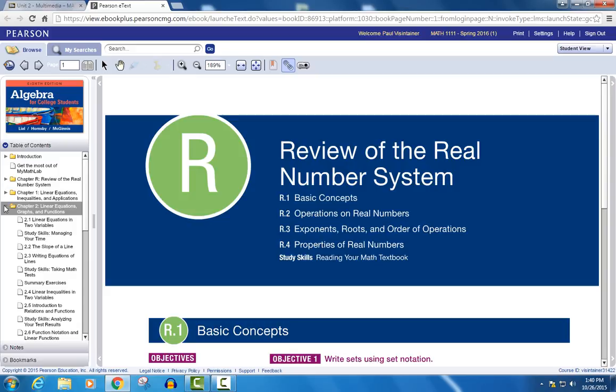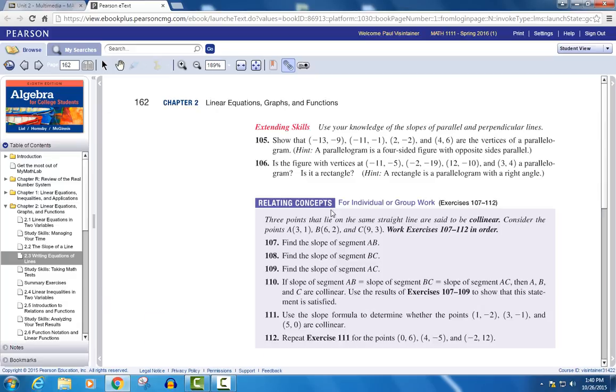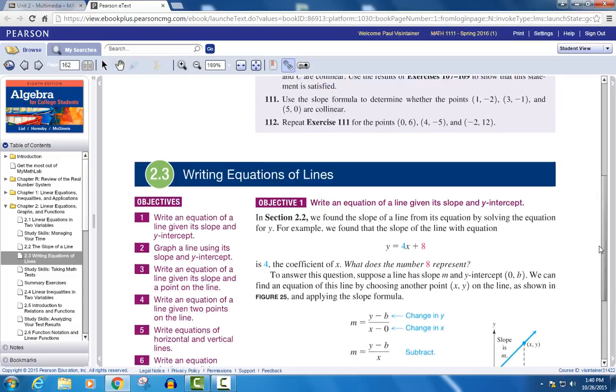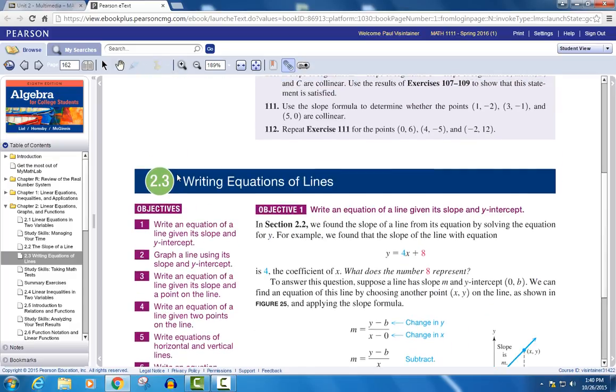It gives you a drop down from Chapter 2, and I can go to, say, 2.3, Writing Equations of Lines, and navigate right to that particular section. I can use the scroll bar down here to go down a little bit further, and see, there it is, the beginning of 2.3.